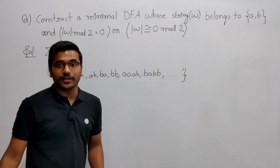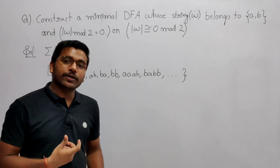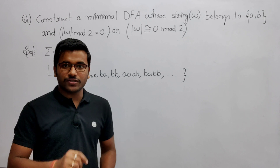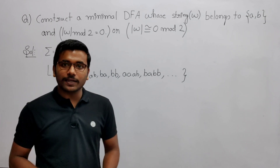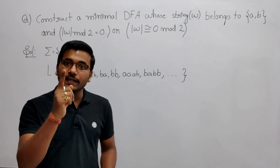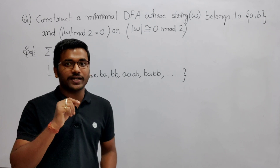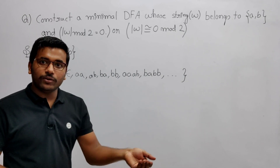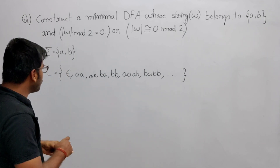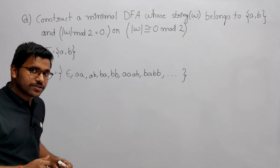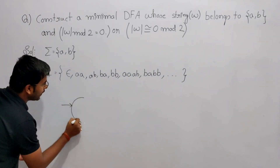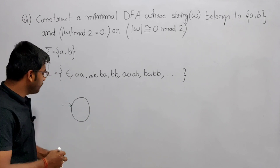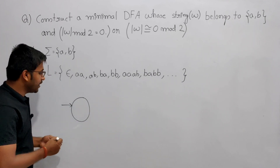So every state is going to indicate something. I will construct a minimal DFA in such a way that one state will indicate that the remainder is 0, and another state will indicate that the remainder is 1. The state which indicates remainder 0 will be the final state, so it accepts strings whose length divided by 2 gives 0. The initial state indicates length 0, which is epsilon, so we make it a final state.